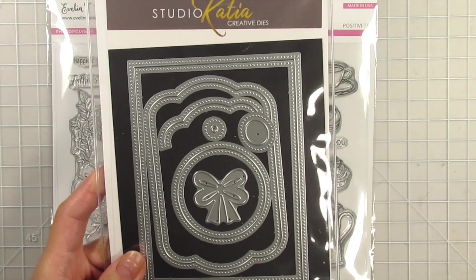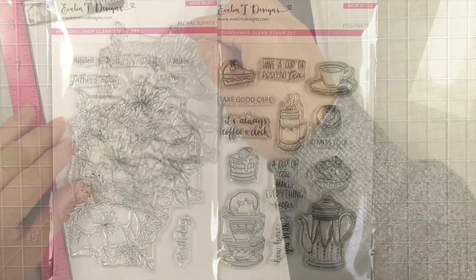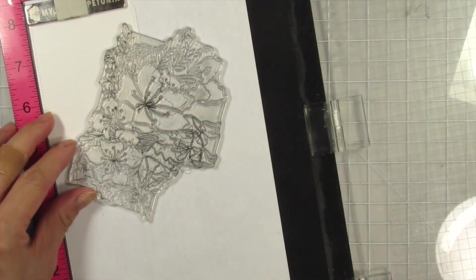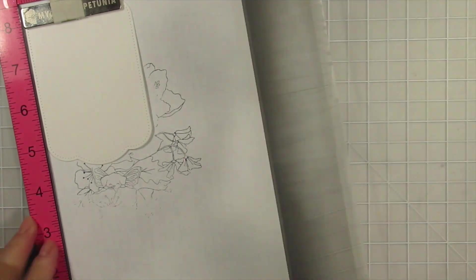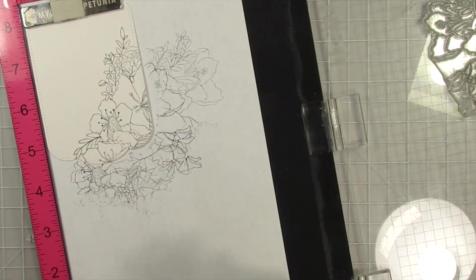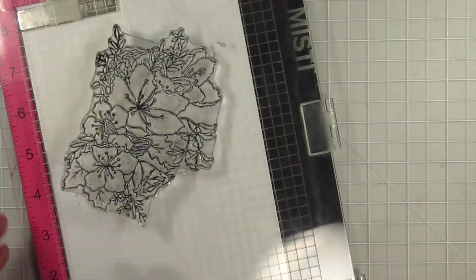For the tag, I'm going to use Studio Katia's Dotted Pattern Set 1 Die. After I die cut the tags from Bristol cardstock, I stamped the Floral Surprise image on the bottom right hand corner using Gina K Amalgam Ink. I chose a different part of the image for both tags.